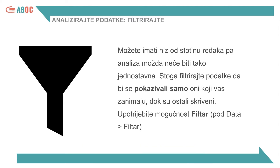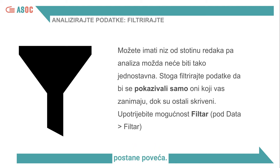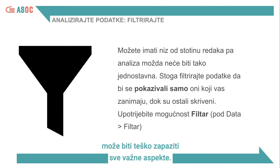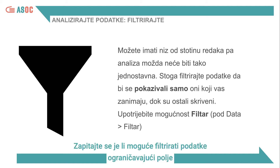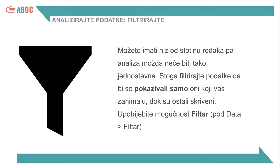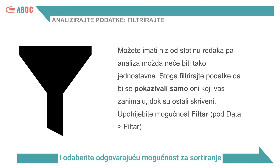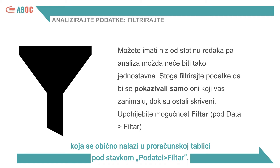The data can also be filtered. This is very useful if the amount of data you have available is starting to become considerably large. For example, in a data set of 100 rows, it might be difficult to grasp all the main aspects. Ask yourself if you can filter the data by limiting the field to only those of interest and hiding the less relevant data. Simply select the entire column containing the data to be filtered and then choose the appropriate sorting option, usually found in a spreadsheet under Data Filter.